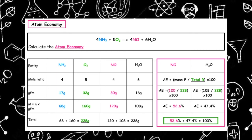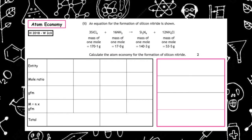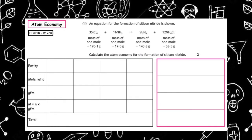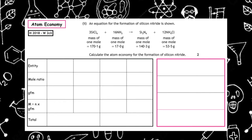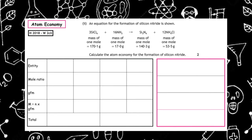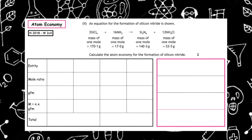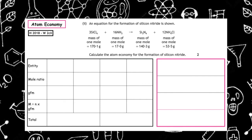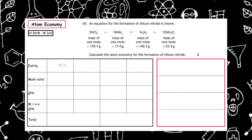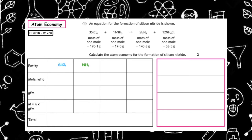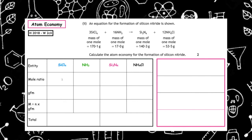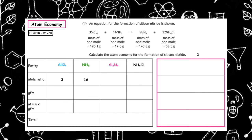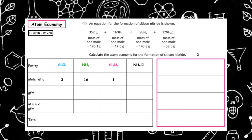This past paper question is from the higher 2018 written 2C part 2. An equation for the formation of silicon nitride is shown. Calculate the atom economy for the formation of silicon nitride. The first thing that we have to do is take down the entities, so we write down the formula for each of the things given in the balanced equation. We then do our mole ratio, which is a 3 to 16 to 1 to 12 ratio.